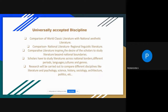When we talk about the term comparative literature, it is a different discipline — a universally accepted discipline. We can compare world classical literature with national aesthetic literature, and we can compare national literature with regional linguistic literature. The term comparative literature inspires the desire of scholars to pursue their research beyond national boundaries.